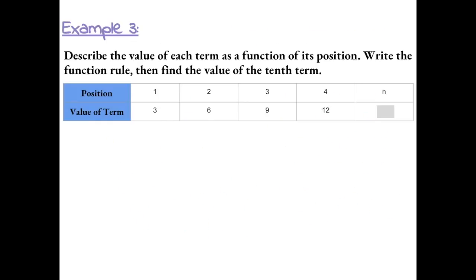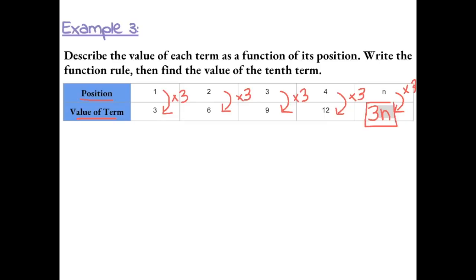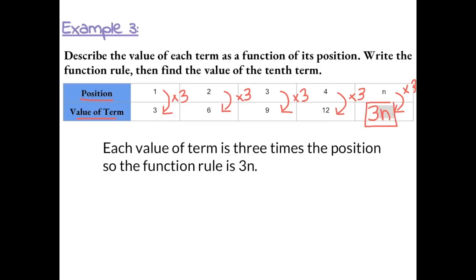Example 3: We want to notice a pattern between the position and the value of the term for each part of the table. From 1 to 3, 2 to 6, 3 to 9, and 4 to 12, I notice they are all times 3 — multiplying the position number to get the term value. So if we write a general function rule using the variable n, we multiply n by 3, giving us the function rule 3n.